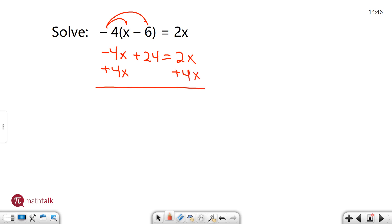Remember when you're moving things around in an equation all you have to do is do the opposite operation. So these will cancel. 24 will drop down. And 2x's plus 4x's is 6x's.